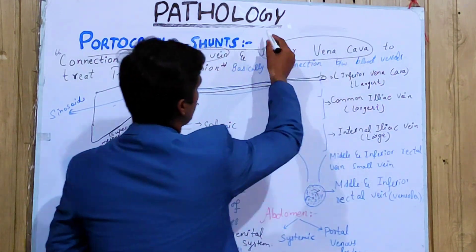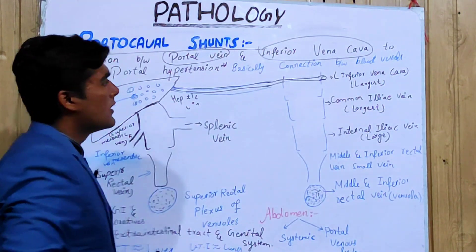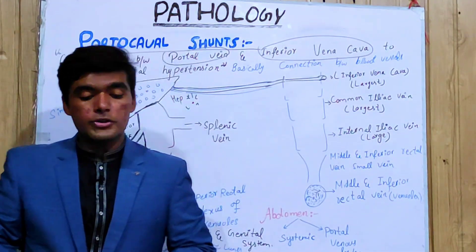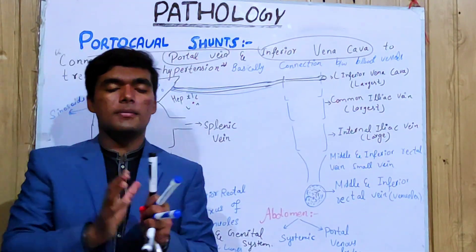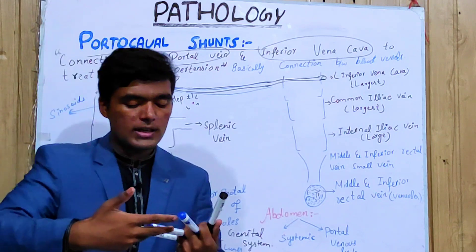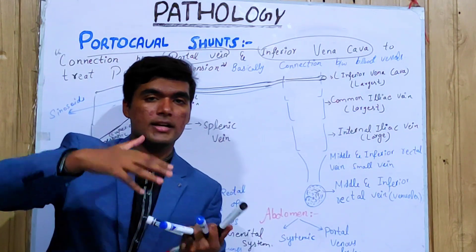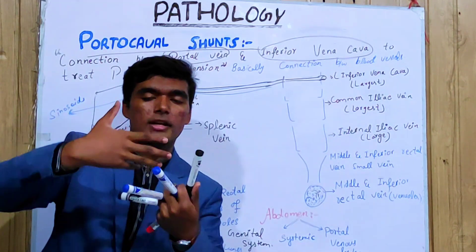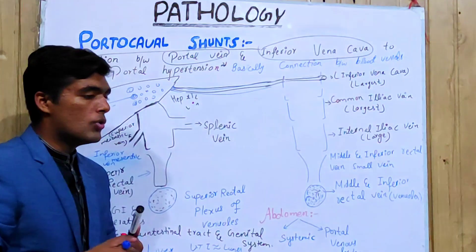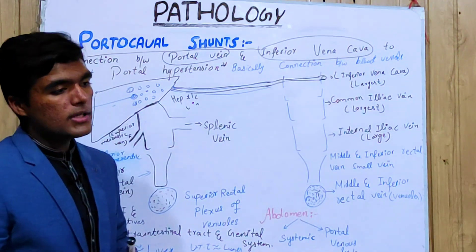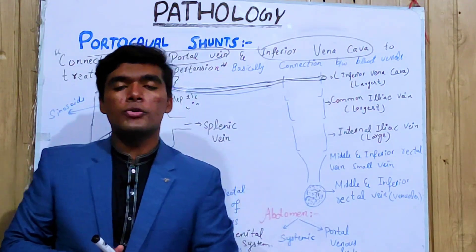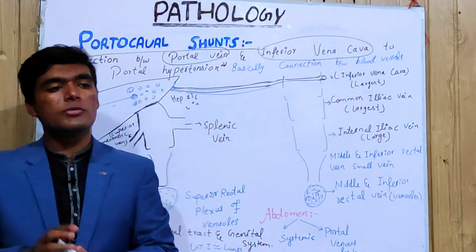The portocaval shunt is basically a connection between the portal vein and the inferior vena cava. Its function is basically to reduce portal hypertension, and it is a connection that occurs between the veins in the abdomen.